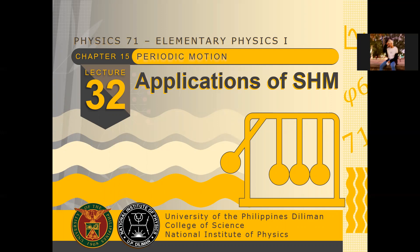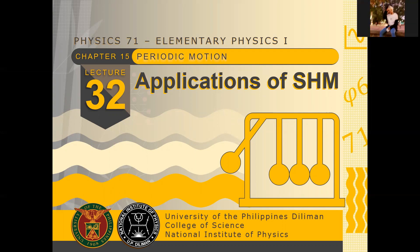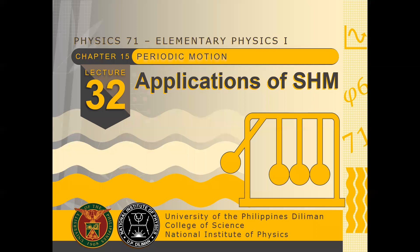Our model for simple harmonic motion is the spring-mass system. But we will see that there are many other systems that are oscillating — not just the spring-mass. In that case, there are other systems that we can model as simple harmonic because they are also oscillating. So if the system is oscillatory, we can model it as something that's simple harmonic. But in some cases, we need some approximations, which we will see in the case of the simple pendulum and the physical pendulum — there are what we call small oscillations.